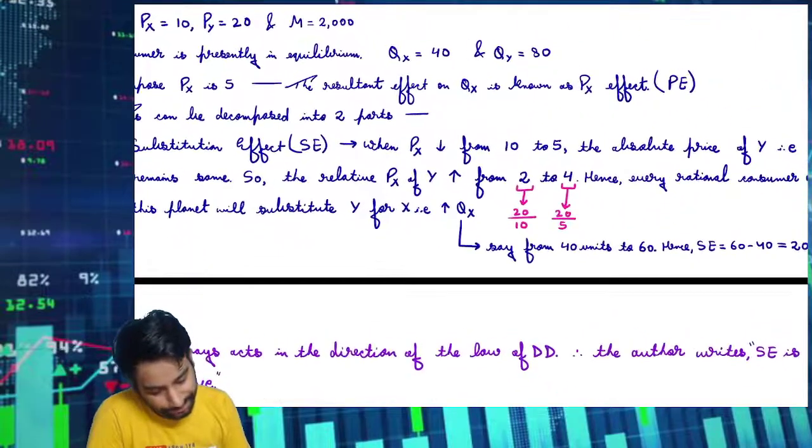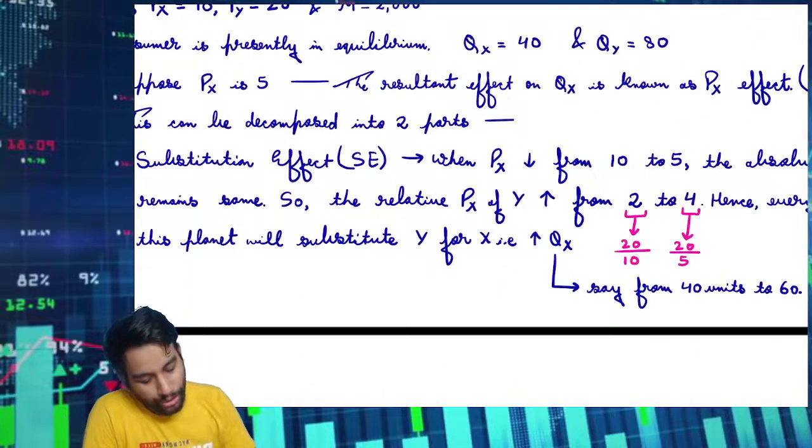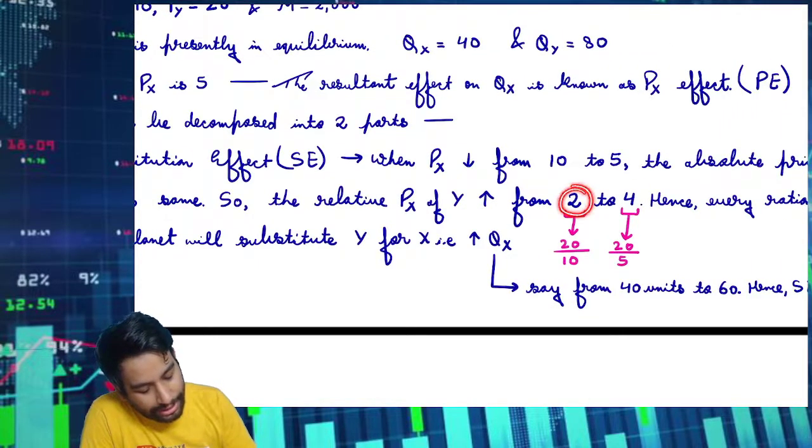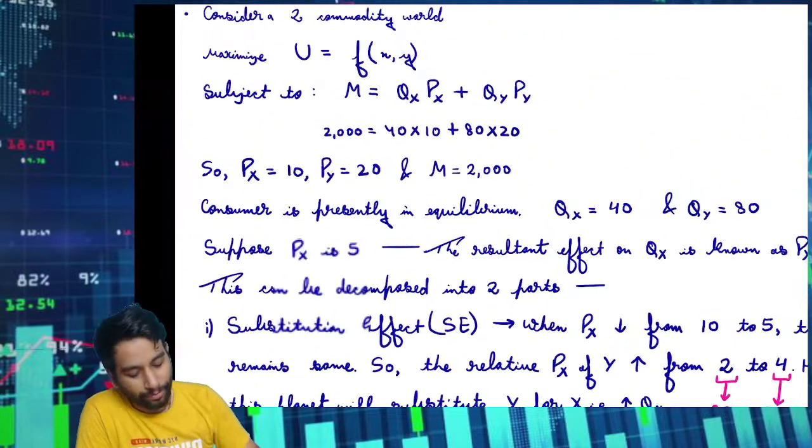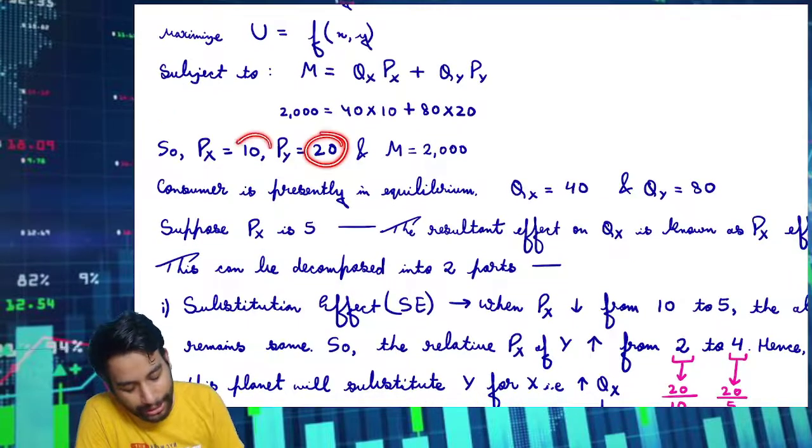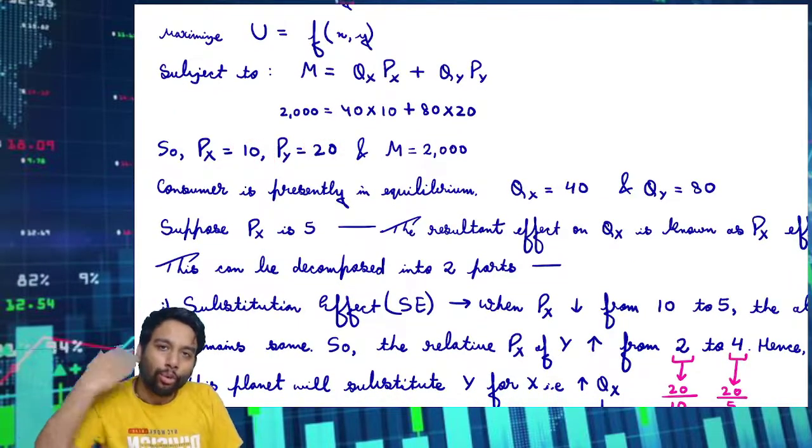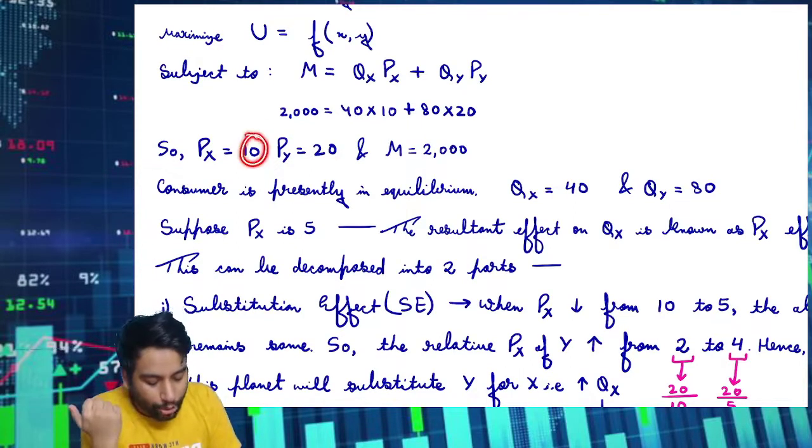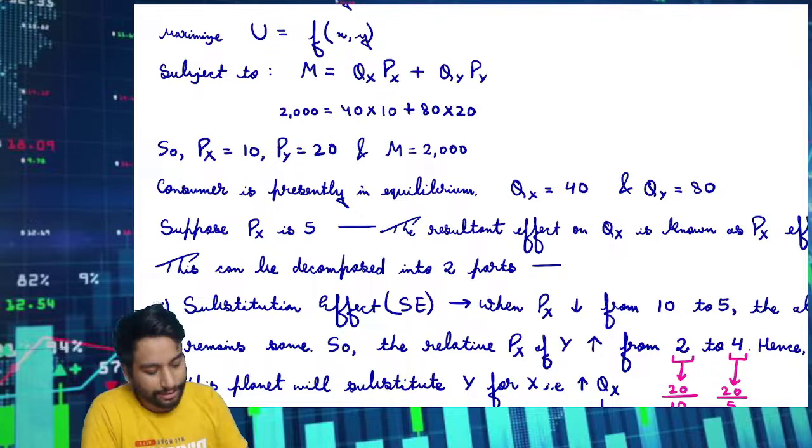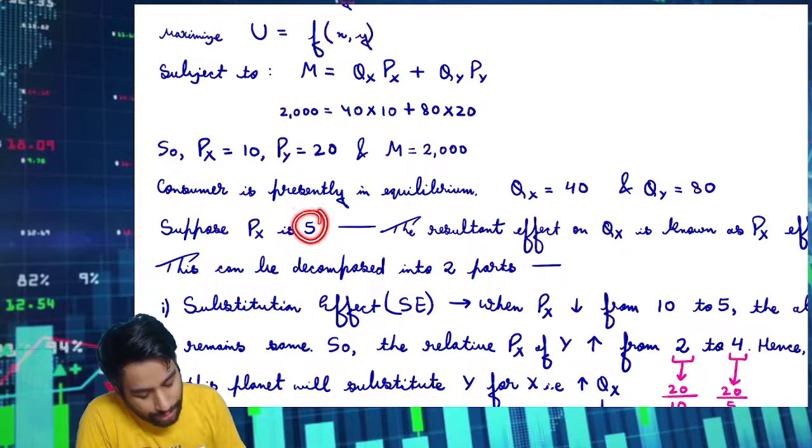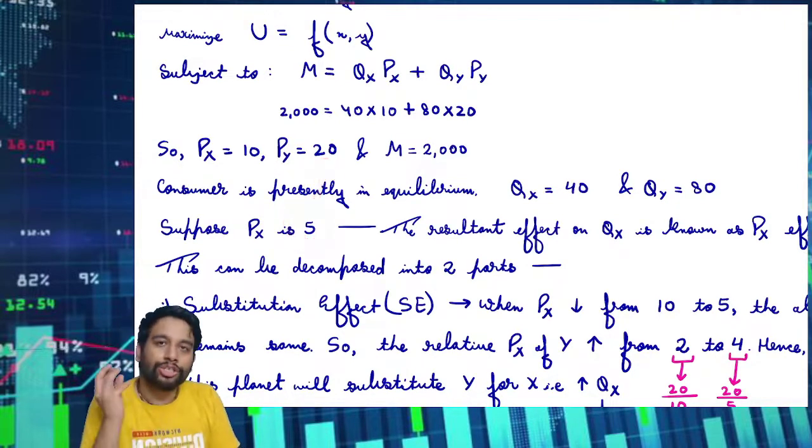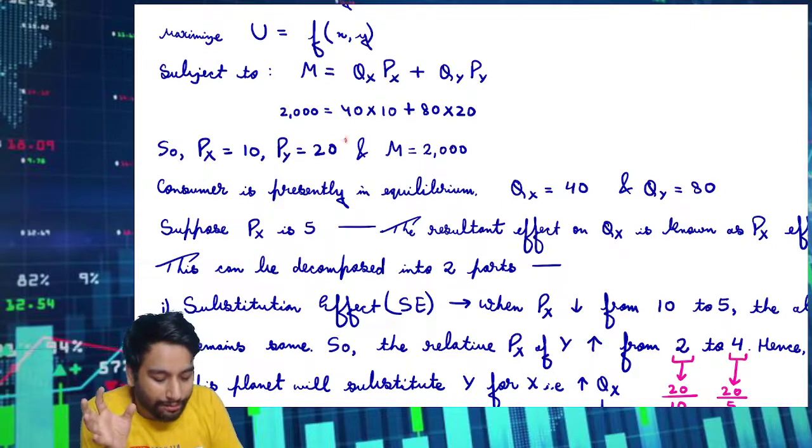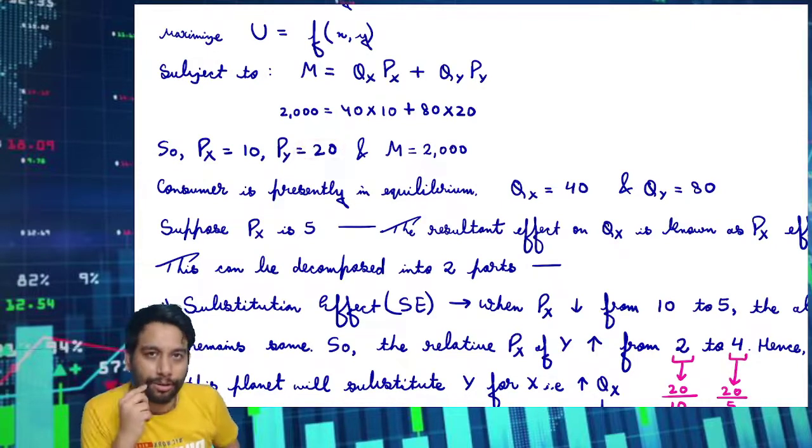So relative to Y, I become double better. Relative to Y, I become double better. पहले 20 by 10, I was 2 times better. If I leave myself and buy Y instead, I could get half X earlier. Now, because it is 5, I can get Y for 0.25, meaning I can get less Y.